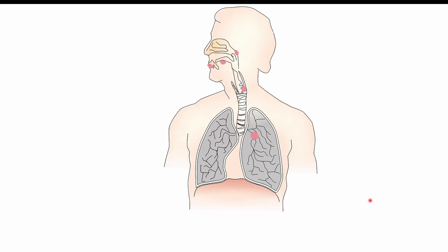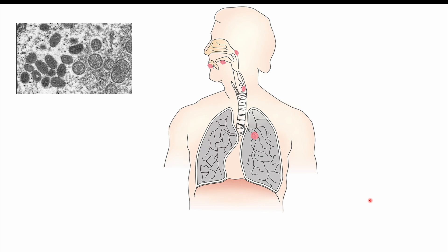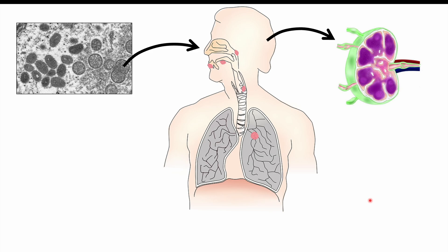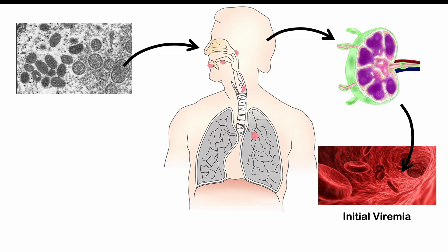Regarding pathophysiology, if exposed to this virus through droplets or skin contact, it can enter through the oropharynx, nasopharynx, or mucosal membranes, and also through the skin. The M-pox virus uses viral surface proteins — including one known as F13 — to enter host cells. At the site of inoculation, it spreads to local lymph nodes, multiplies there, and then enters the blood in what we call the initial viremia stage.